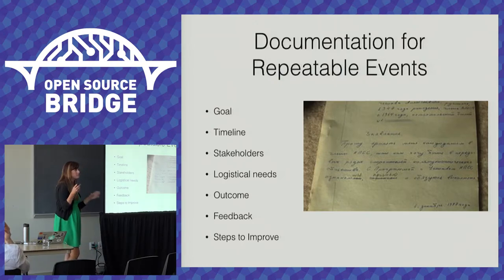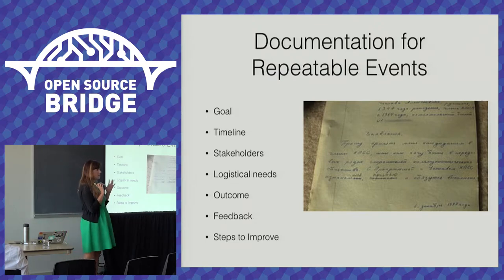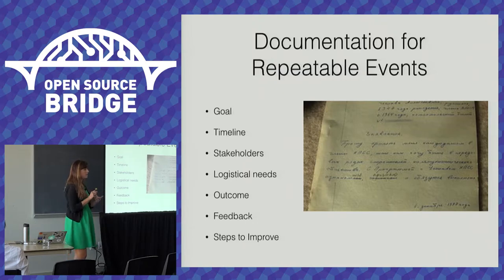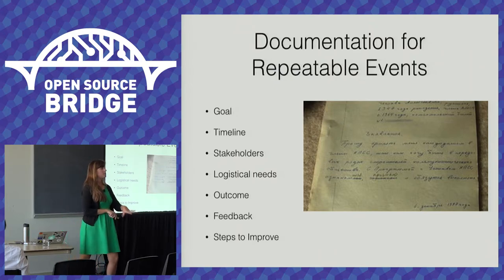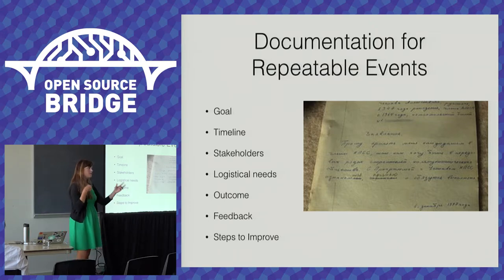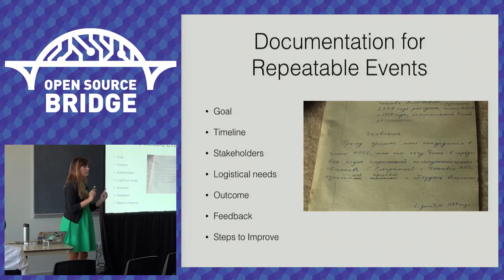Once you do all this work to build your events, you want to be able to repeat them, so document everything. I open a new document for every event and write my goal and desired outcome, the timeline, every task with a due date and an owner. Any meeting notes go into that one document so I'm not fishing around everywhere — whether it's swag timelines or logistical information I need to remember.